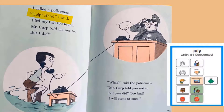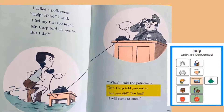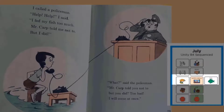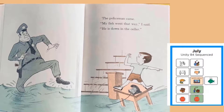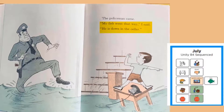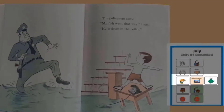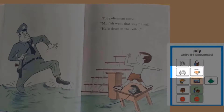I called a policeman. Help, help, I said. I fed my fish too much. Mr. Carp told me not to, but I did. What? What? said the policeman. Mr. Carp told you not to, but you did? Too bad. I will come at once. Oh, good. The police officer said he would come and help the boy with his fish.